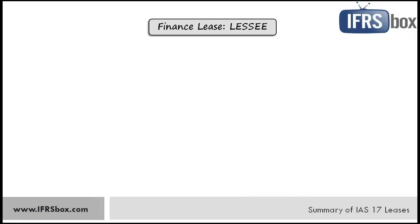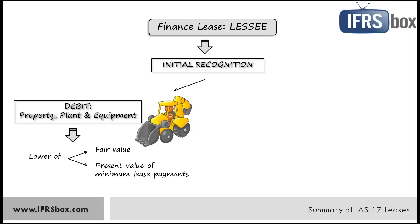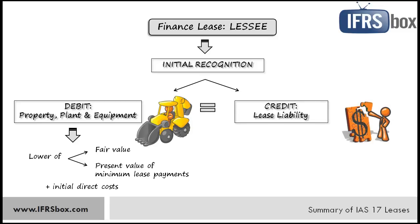Now let's explain how the lessee shall recognize the finance lease. Initially, the lessee recognizes the leased asset under property, plant and equipment — that's the debit side of the entry. The amount is the lower of the asset's fair value and the present value of the minimum lease payments. The present value is determined by discounting minimum lease payments using the interest rate implicit in the lease. Also, initial direct costs incurred by the lessee in relation to the lease are added to the cost of the recognized asset. The credit side of the entry is the lease liability, which is in fact a kind of loan. Don't forget to split this liability into current and non-current parts.